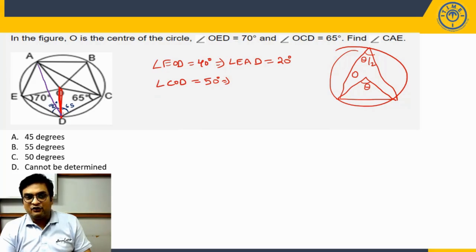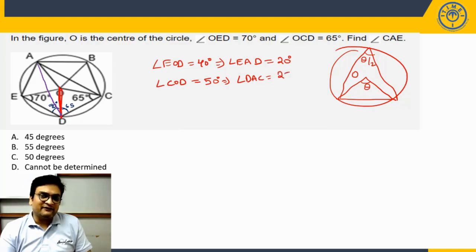Similarly, angle COD is 50 degrees. So that means angle subtended by the same chord at A, this angle, this entire angle DAC, will be half of this, 25 degrees.